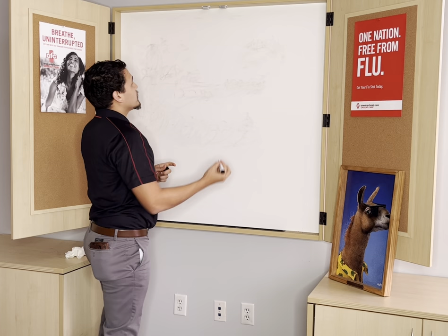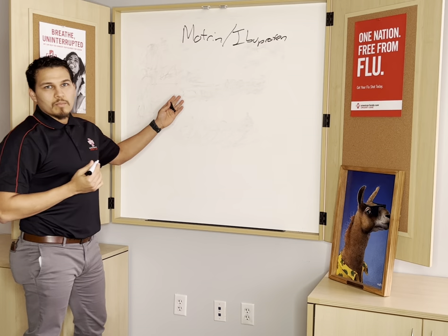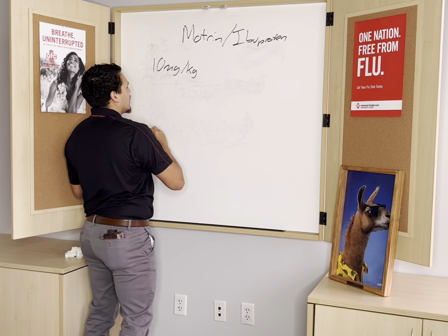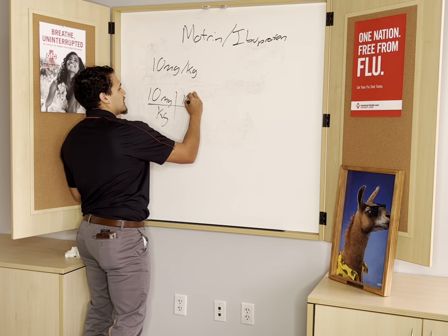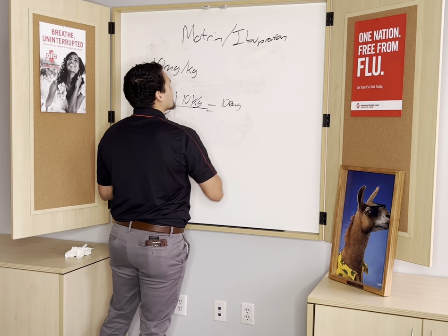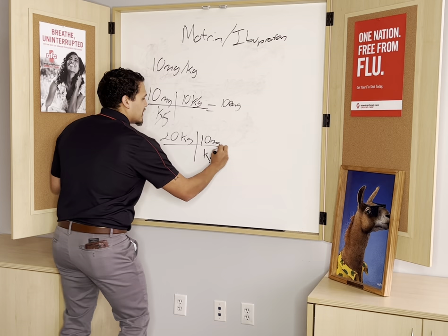The first thing we're going to talk about is Motrin, also known as Ibuprofen. This medication is important because it not only works as a fever reducer, it's also an anti-inflammatory. The dosing for Ibuprofen is 10 milligrams per kilogram — so we give our patient 10 milligrams for every 1 kilogram of weight. Our first patient is 10 kilograms (our 22-pound baby): we cross out the kilograms and give them 100 milligrams per dose. For our 20-kilogram baby, we give 10 milligrams per kilogram, so they get 200 milligrams.